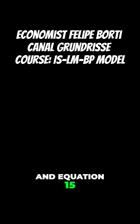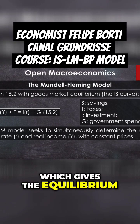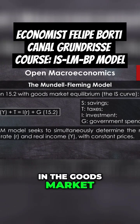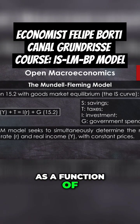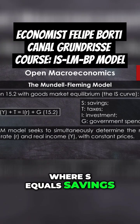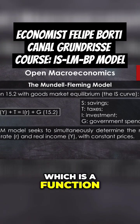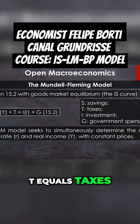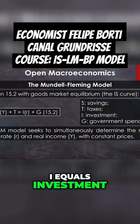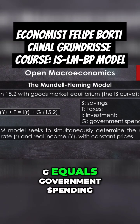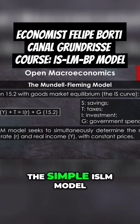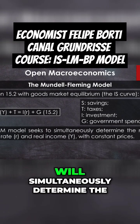And equation 15.2, which gives the equilibrium in the goods market — the IS curve — where S as a function of Y, T equals I as a function of R, plus G. Here, S equals savings, which is a function of income; T equals taxes; I equals investment, which is a function of the interest rate; and G equals government spending. Thus, the simple IS-LM model will simultaneously...